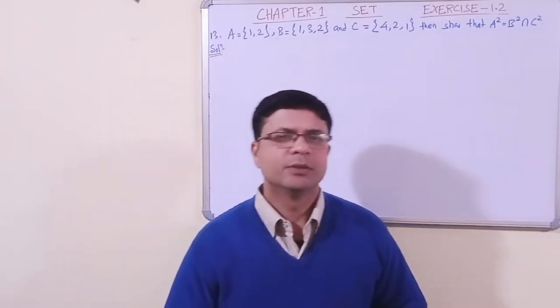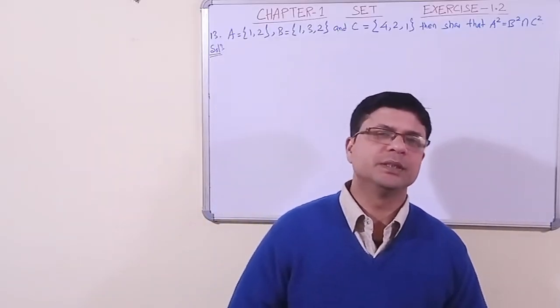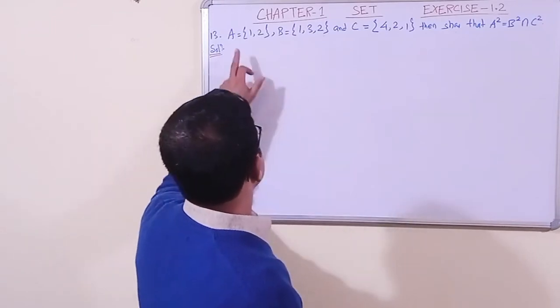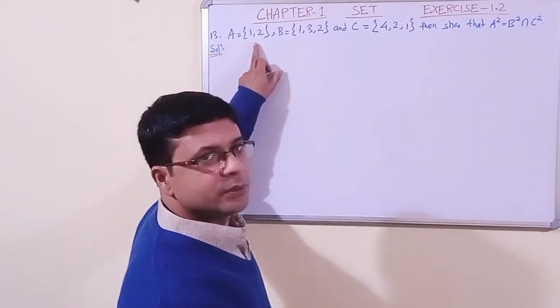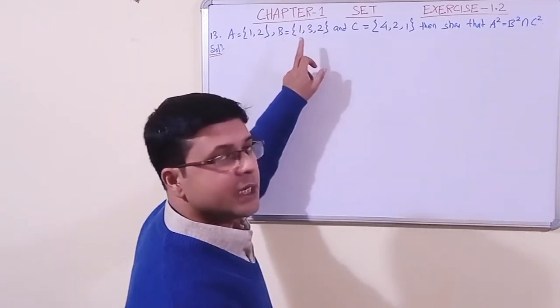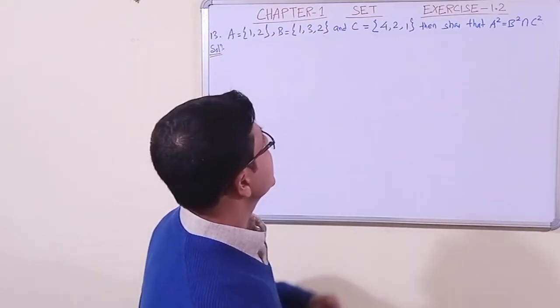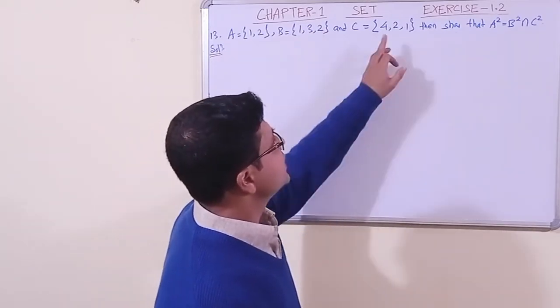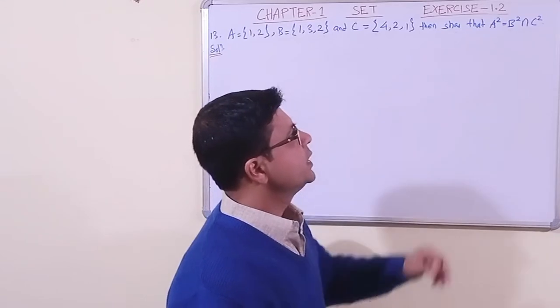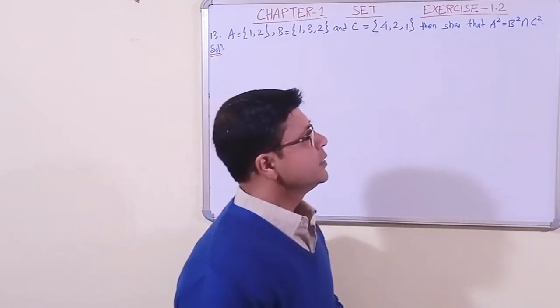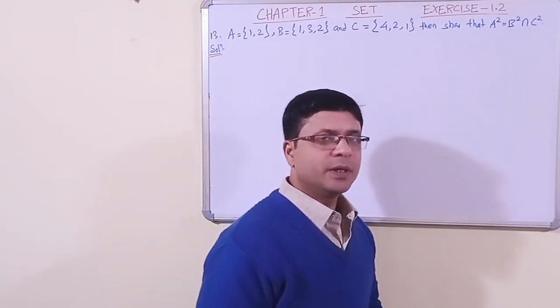Now my beloved students, we have taken question number 13. This is a very easy question we have taken today. Set A has two elements 1 and 2, set B has three elements 1, 3, and 2, and set C has three elements 4, 2, 1. Then show that A square is equal to the intersection of B square and C square.